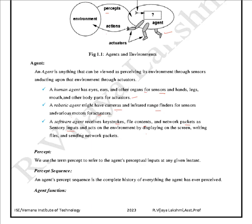We use the term percept to refer to the agent's perceptual inputs at any given instant. A percept sequence is the complete history of everything the agent has ever perceived. The process of looking for a sequence of actions that reaches the goal is related to the percept sequence.